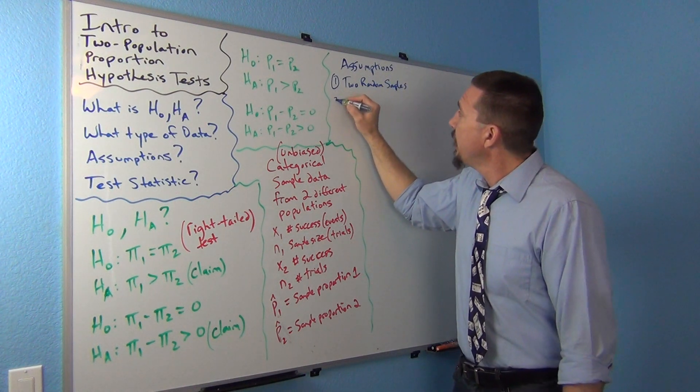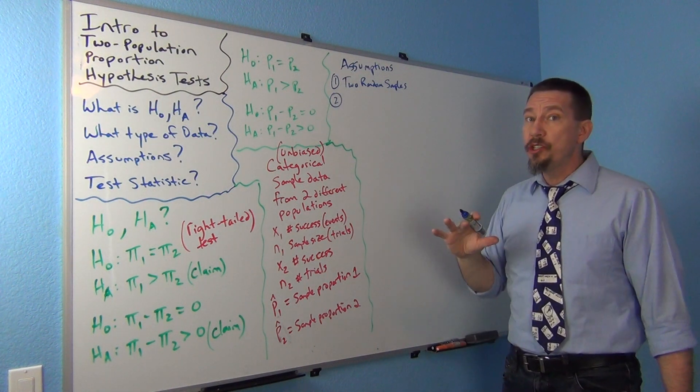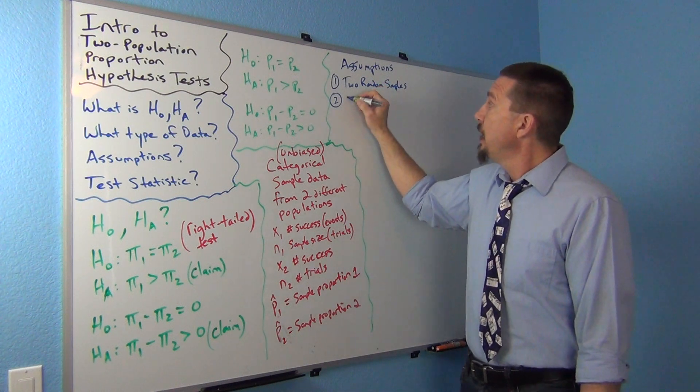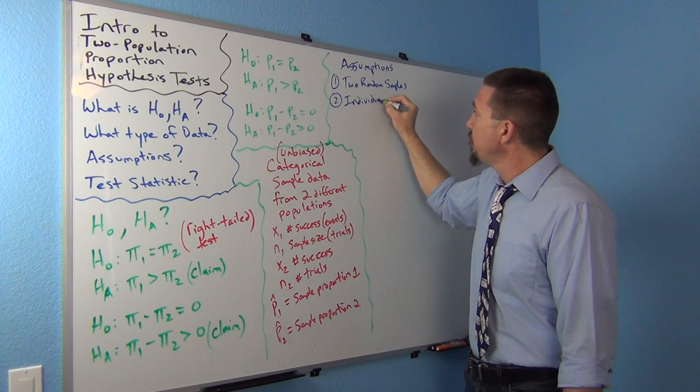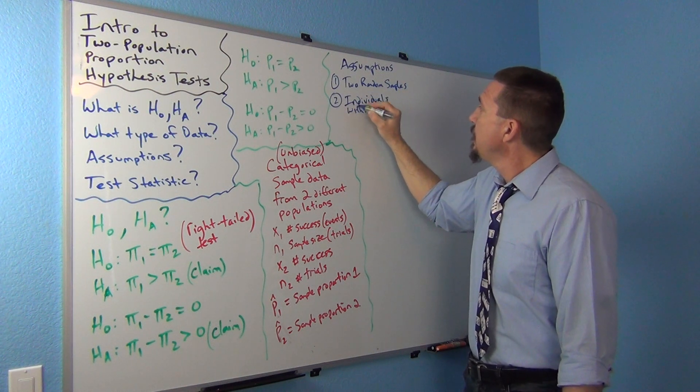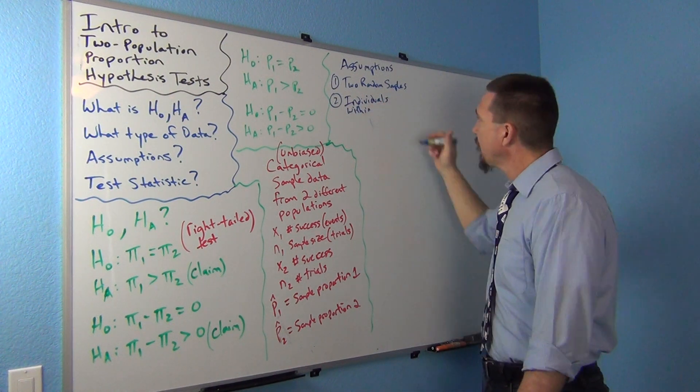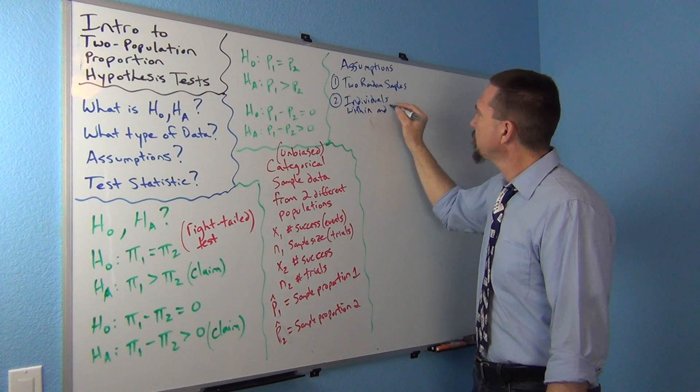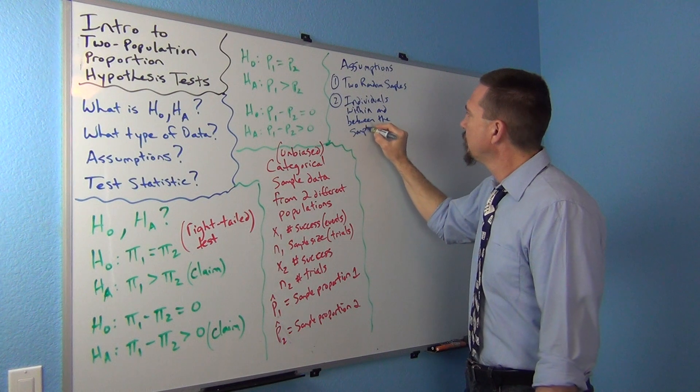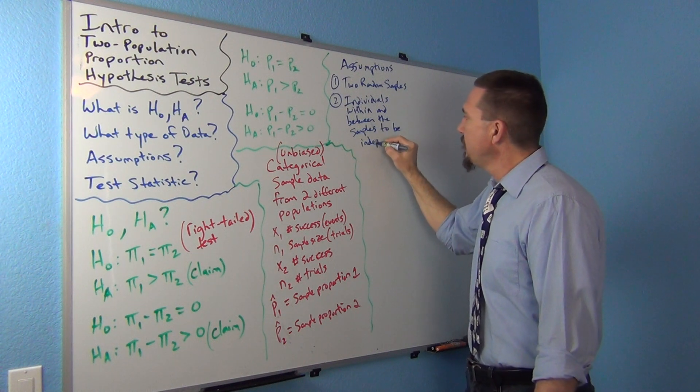We would like to know, we would like the individuals within the samples and between the samples to be independent of each other. So individuals within and between the samples to be independent of each other.